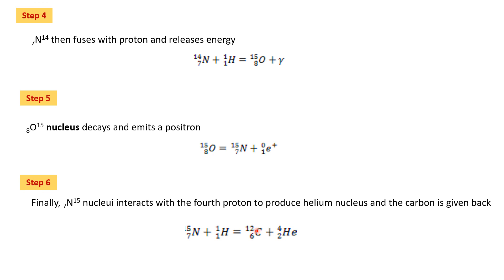As mentioned, both the PP cycle and the CN cycle are nuclear fusion reactions — these are examples of nuclear fusion reactions. This is all about today's video. Thank you for your patience in listening.